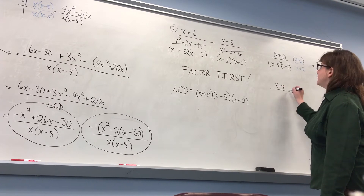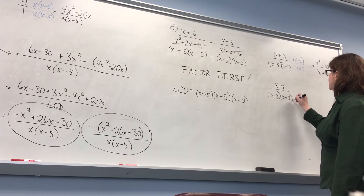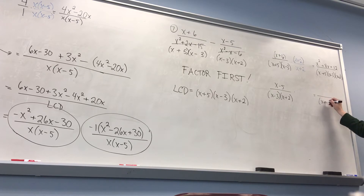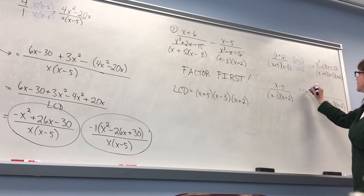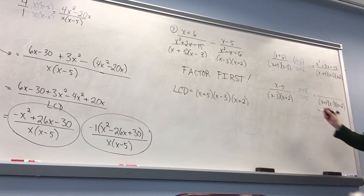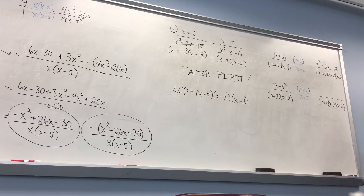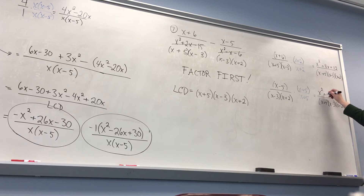The next fraction is x minus 5 over x minus 3 times x plus 2. Leave a little space, write the denominator that you want. What can I multiply times the denominator I have to get to the denominator I want? x plus 5. So I multiply by x plus 5 over x plus 5. Notice we have the same terms but opposite signs in the middle — these are conjugates — so we can use the conjugate shortcut. You'll end up with x squared minus 25.